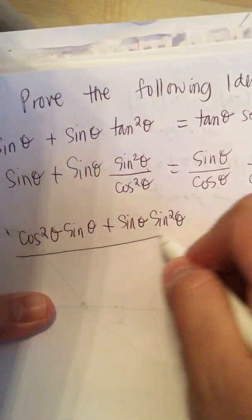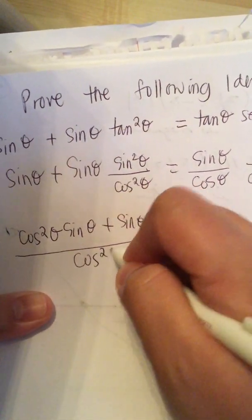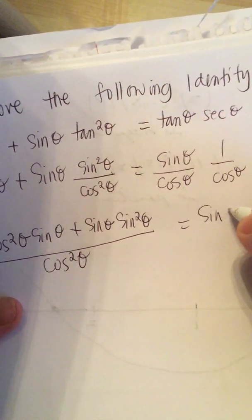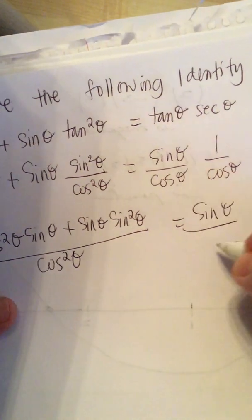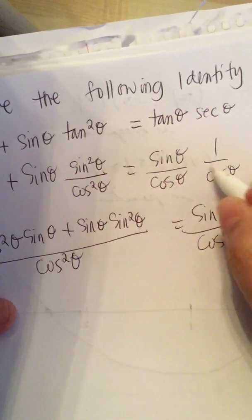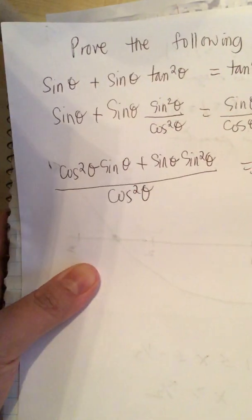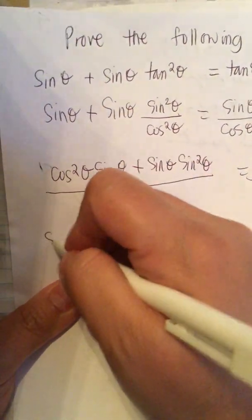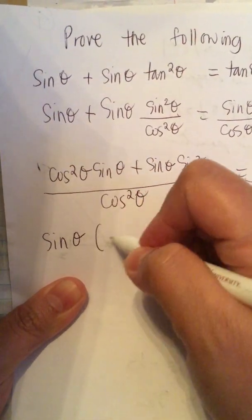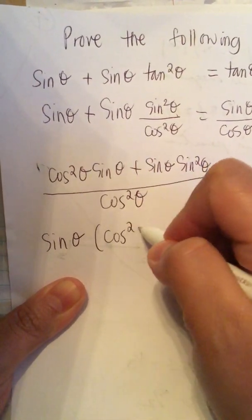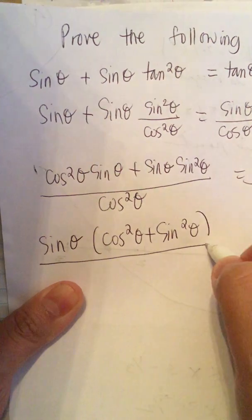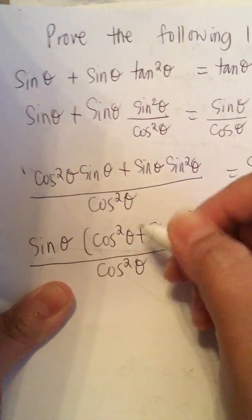All over cosine squared theta, which is equal to sine theta over cosine squared theta. We multiply across the top and across the bottom, giving us sine theta times cosine squared theta plus sine squared theta, all over cosine squared theta.